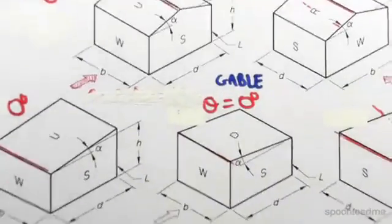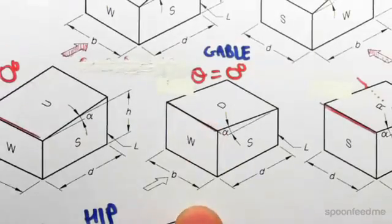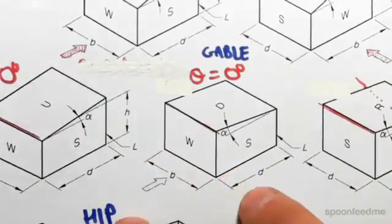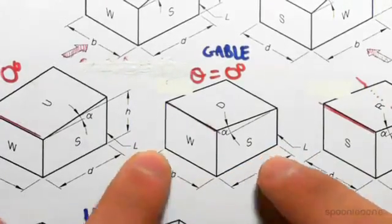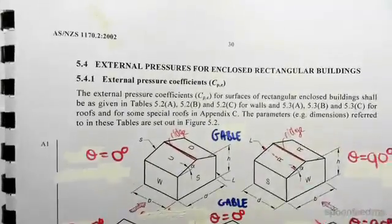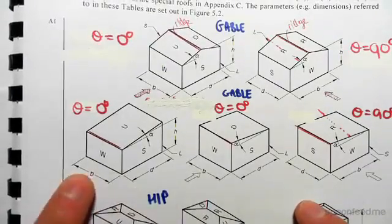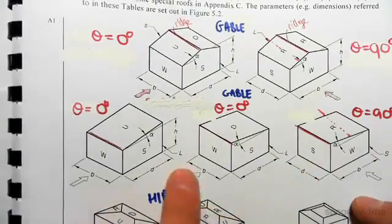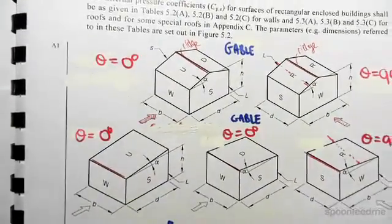On page 30 you can see the labels d and b. In this case, where the wind is hitting the windward wall, d is the length of the sidewall and b is the length of the windward wall. Depending on which direction the wind is coming from, d will always be the sidewall and b will always be the windward wall.